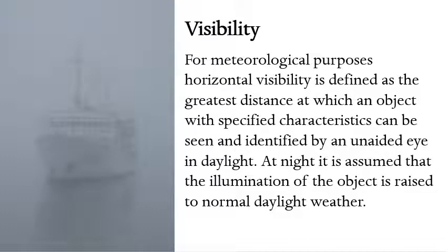For example, on radar you can see an object at six miles, but you cannot see it with your unaided eye. You may only see it at three miles with your naked eye. So your visibility is not six miles as indicated on the radar, but three miles — the distance measured by your naked eye. That is visibility.